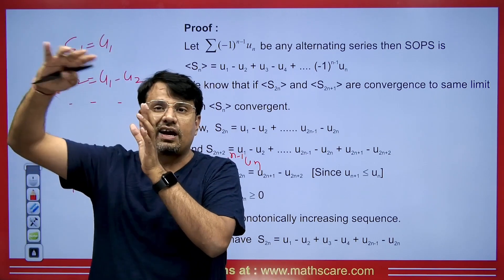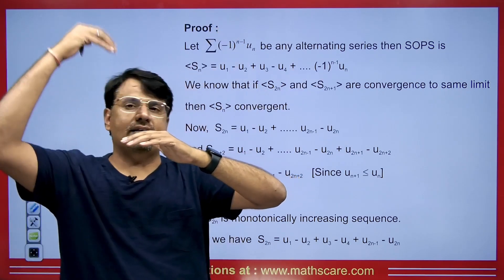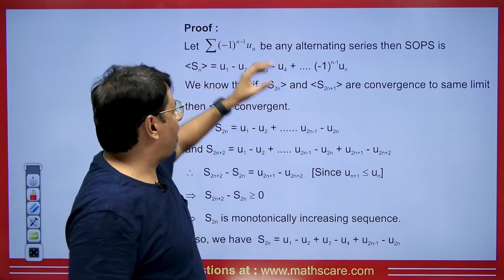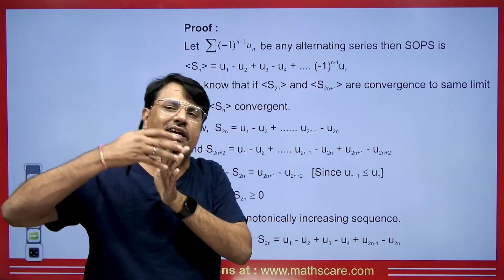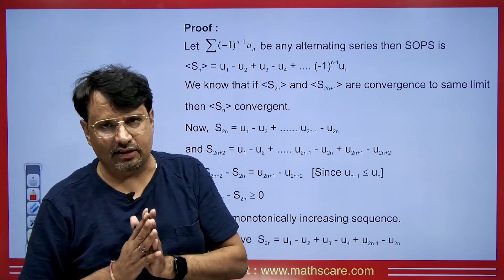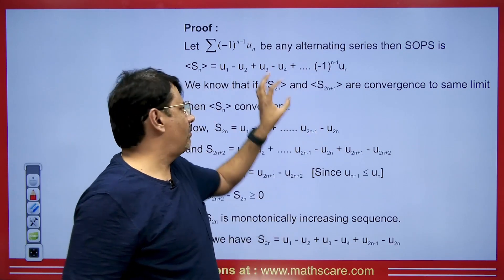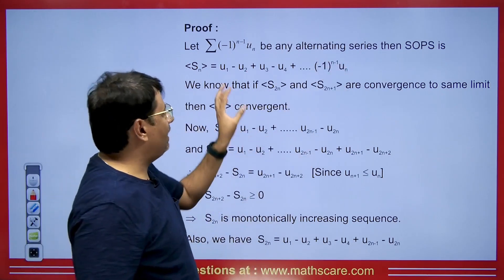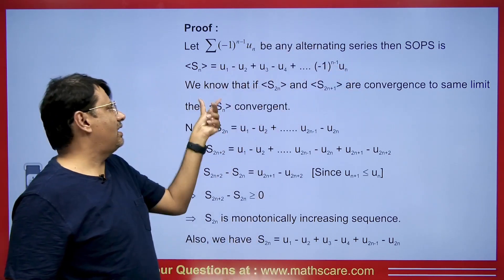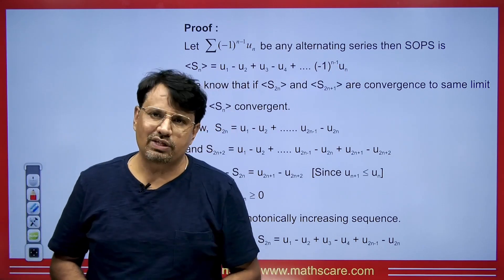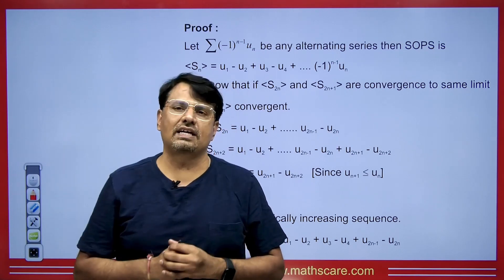From the SOPS, we extract the even terms to form a subsequence S_{2n}, and the odd terms S1, S3, S5, and so on as a complementary subsequence. We separate the SOPS into two complementary subsequences. If both of these complementary subsequences converge to the same limit, then the SOPS itself will also be convergent, and consequently the series will be convergent.